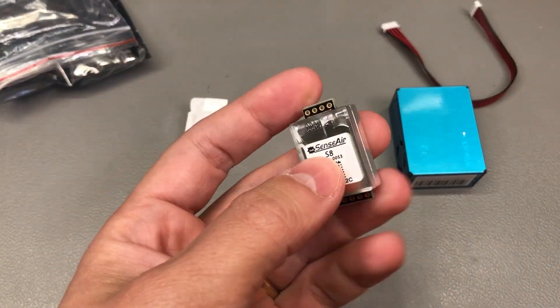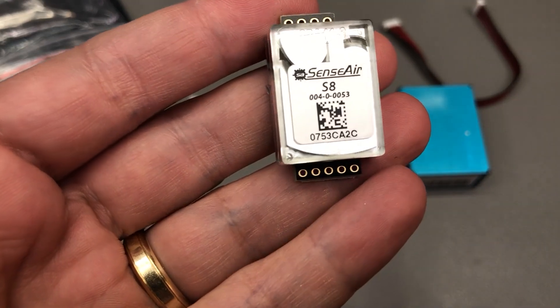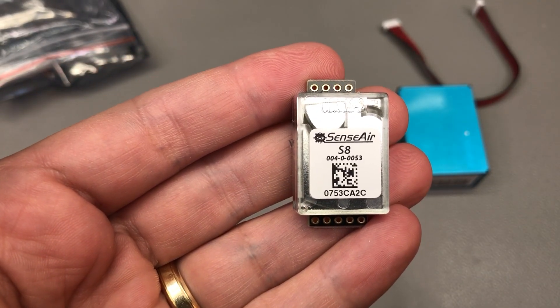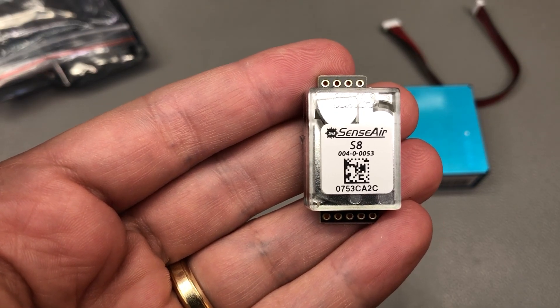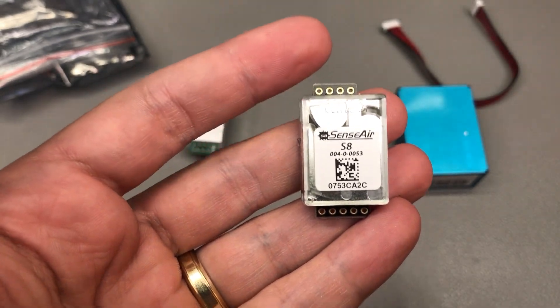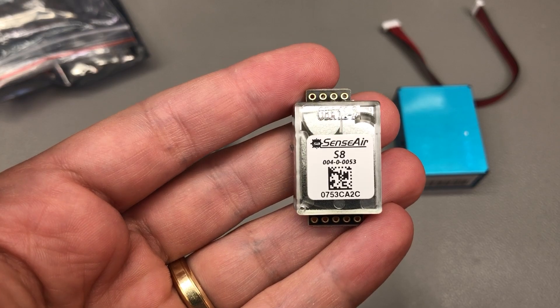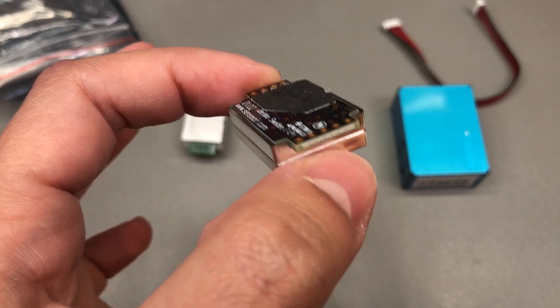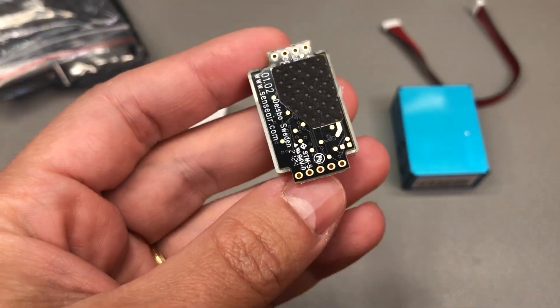My next sensor is the SensAir S8 and once again this is a CO2 sensor with a similar range of 400 to 10,000 ppm. It has a lower average current, it claims less than 18mA average but with peaks of up to 300mA and again a UART serial interface.